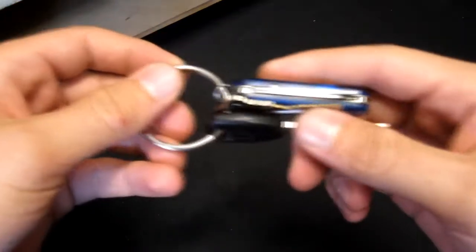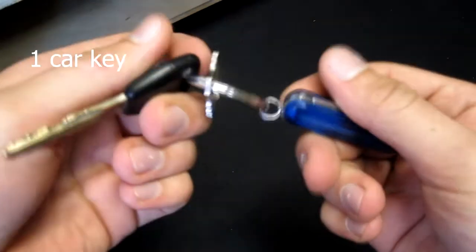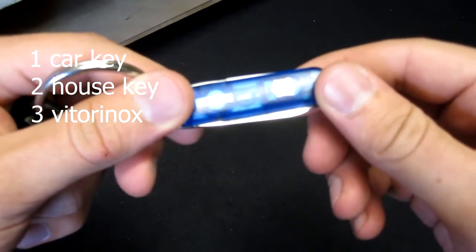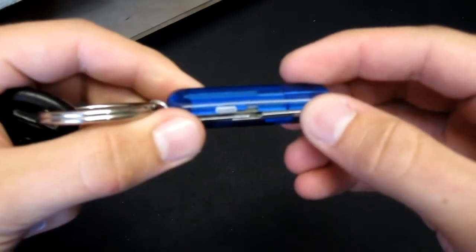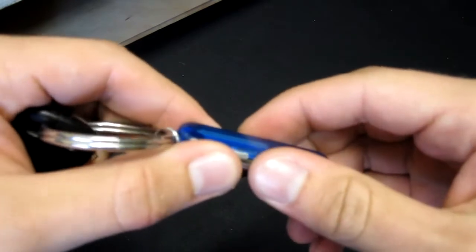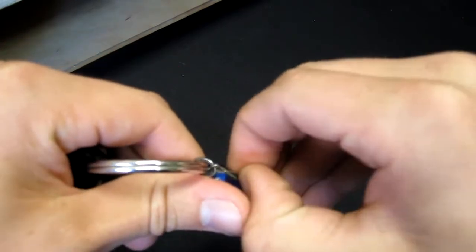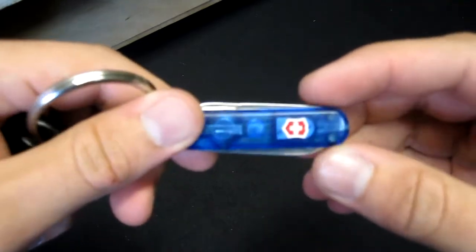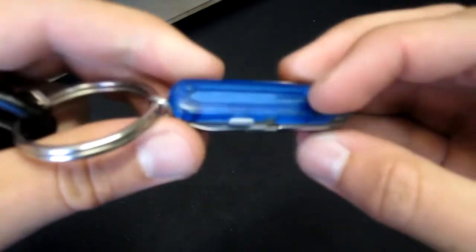So first off, keys. I got my car key, house key, and this Victorinox Swiss Army knife, which I've carried. Well I had one a long time ago but I lost it, and I recently, well not that recently, maybe a year ago, got this one. I'm glad I got it again because it's really useful.